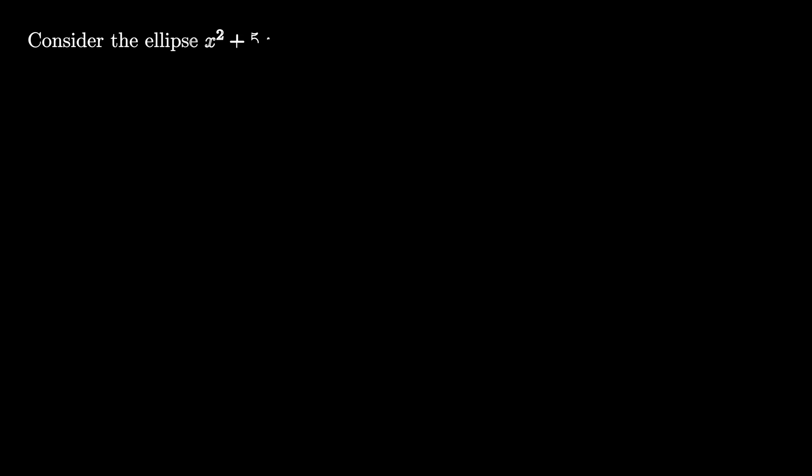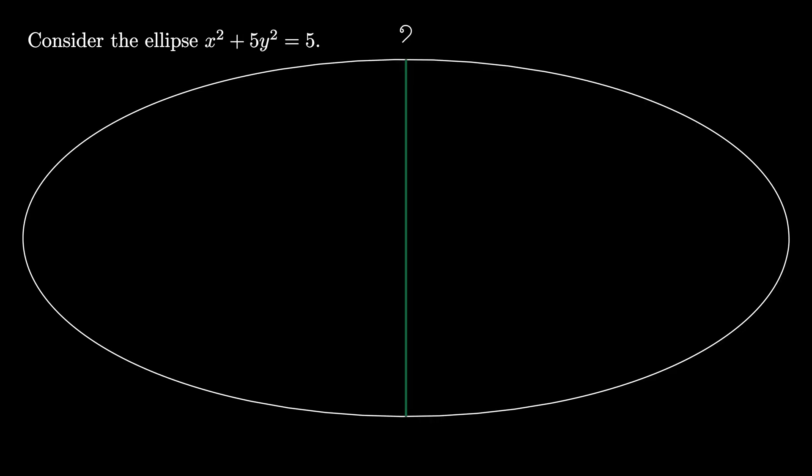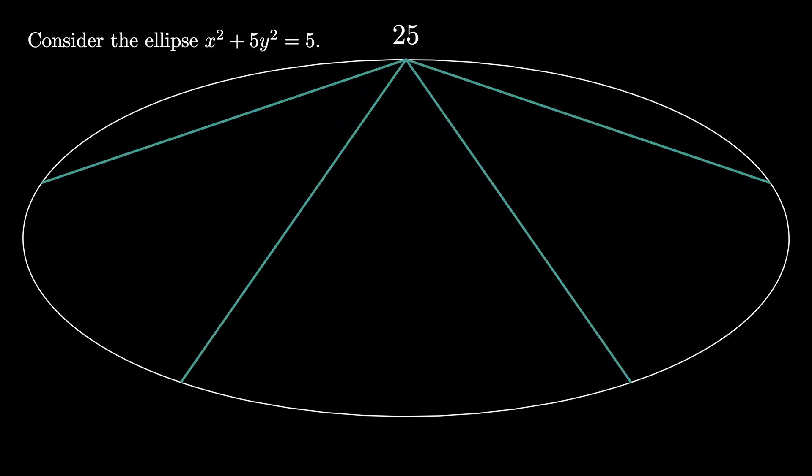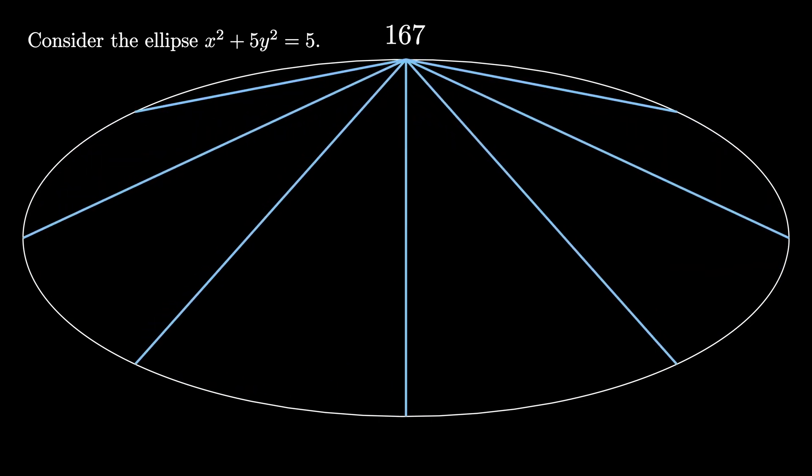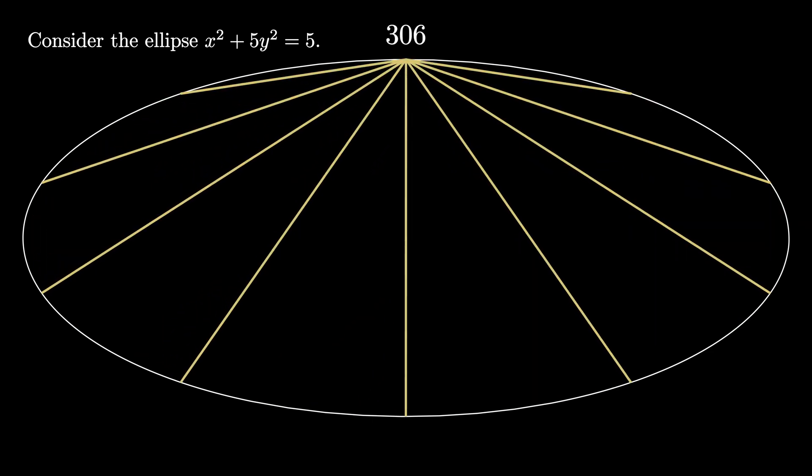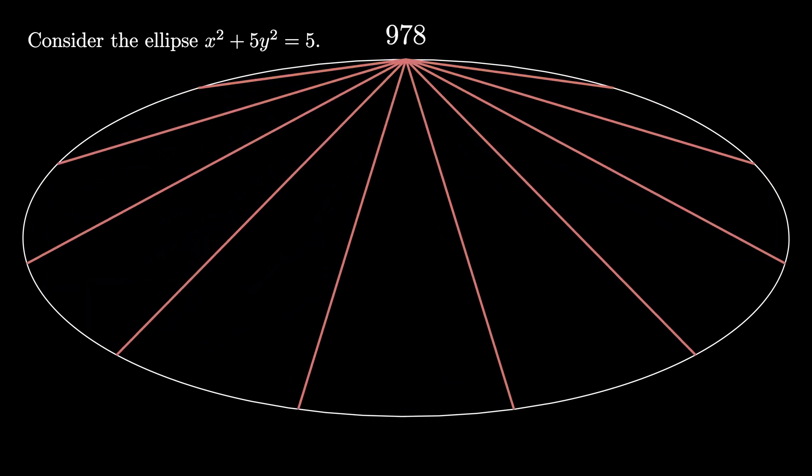Now it's your turn. Consider the ellipse x² + 5y² = 5. Equally space n points around the ellipse, pick one of them, and connect that one to all of the others with chords. Compute the product of the chord lengths as we've done here.